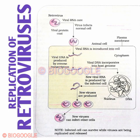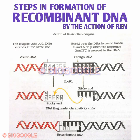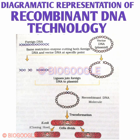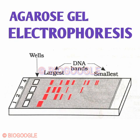Continue showing how the retrovirus DNA incorporates into the animal cell and how new viruses come out of the animal cell. Then from biotechnology, show the steps in formation of recombinant DNA by the action of restriction endonucleases — the sticky ends must be clearly shown. Next, show the diagrammatic representation of recombinant DNA technology: foreign DNA cutting, joining, and formation of a transformant into a recombinant. Next is agarose gel electrophoresis — show the smaller bands, largest bands, and wells clearly.